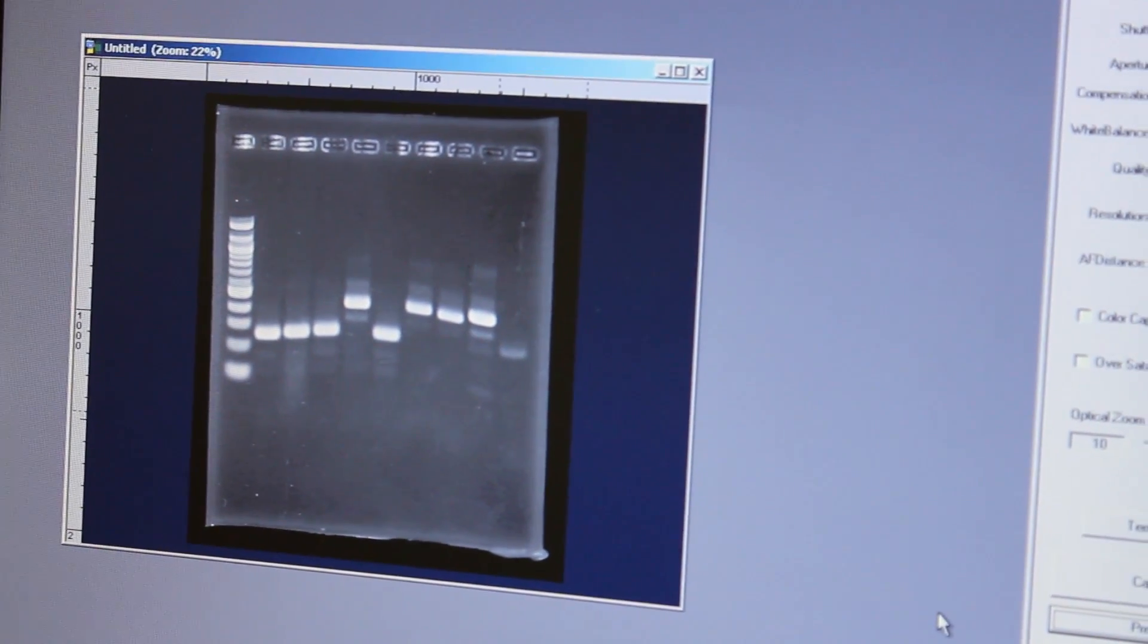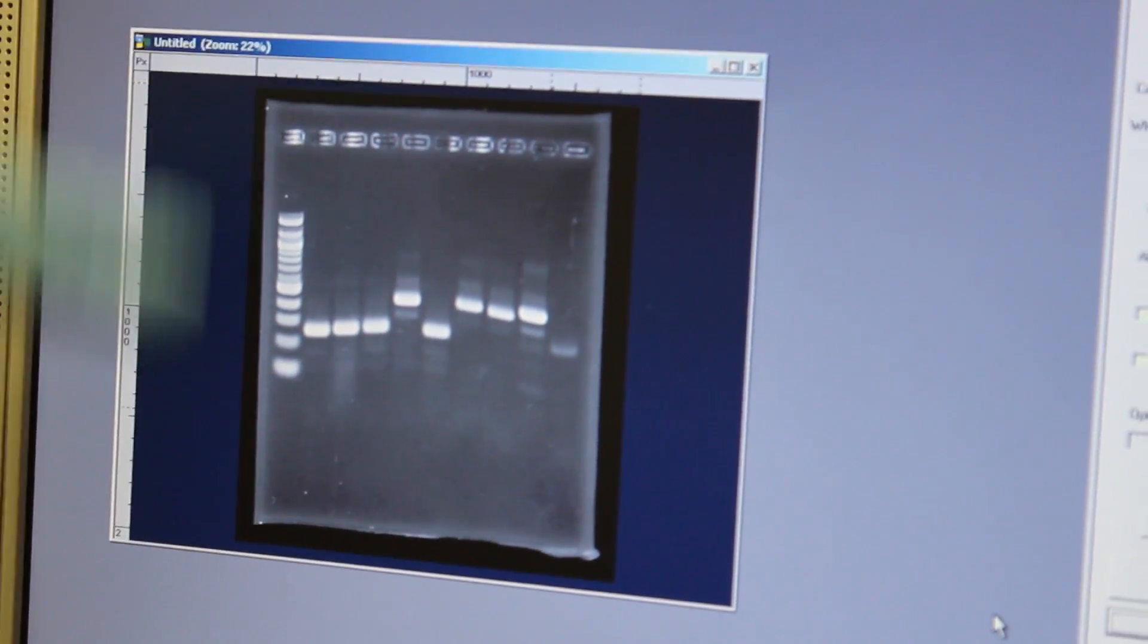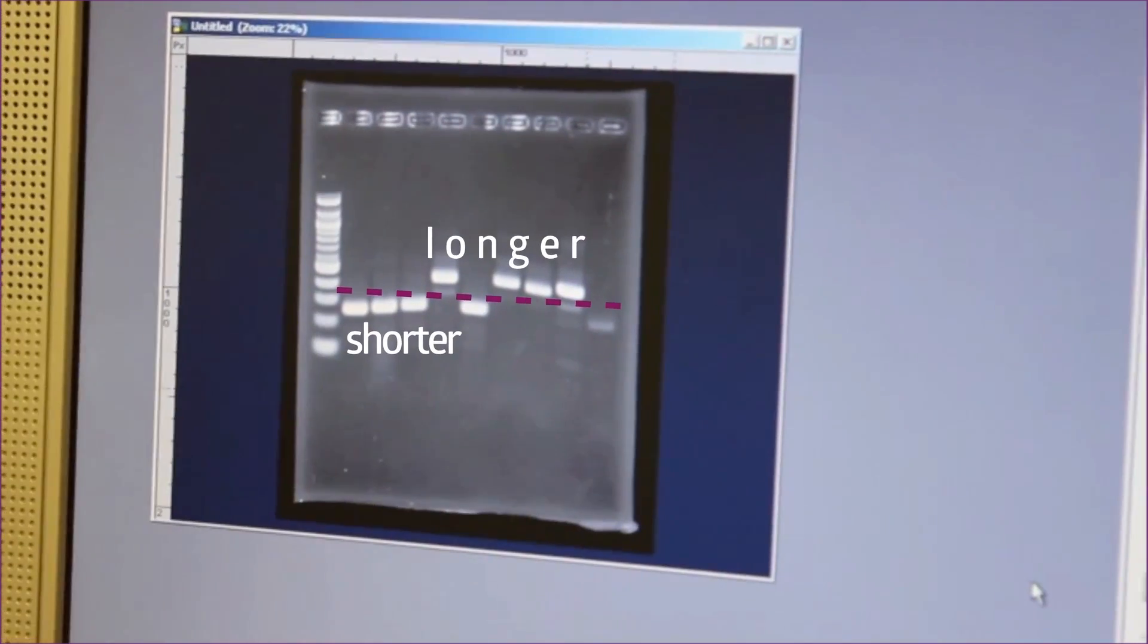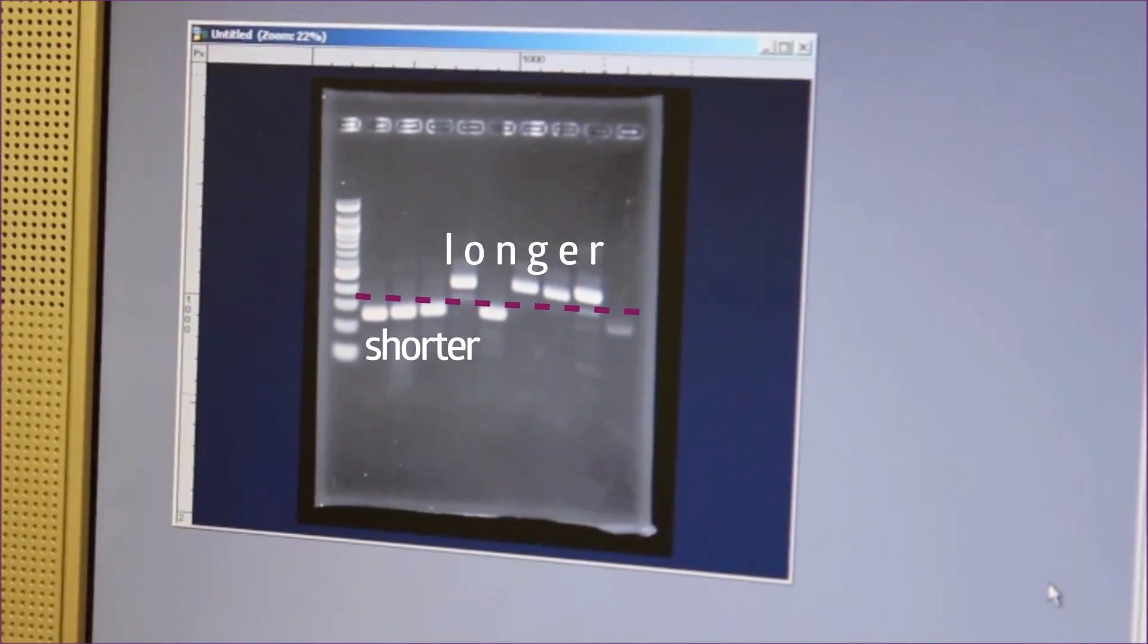Now what we can see is that all the samples worked well. The first lane is what we call a DNA standard ladder. A predetermined number and quantity of different sequences so we can determine how long the PCR products were from our reaction. There are two different length variations of the same DNA sequence region. So already we're seeing some variation across different species.